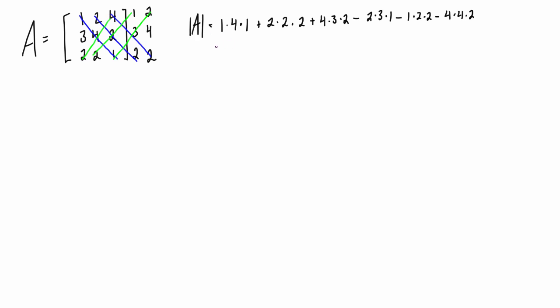When we simplify this, we get this term is 4, plus 2 times 2 is 4 times 2 is 8, plus 4 times 3 is 12 times 2 is 24. Minus what's this—6 minus 4, minus 16 times 2 is 32. We can clean this up a little bit: put all the positives into one term, so we get 4 plus 8 plus 24, that's going to give us 36, and we subtract out 42. When we simplify that, we find the determinant of A is negative 6.